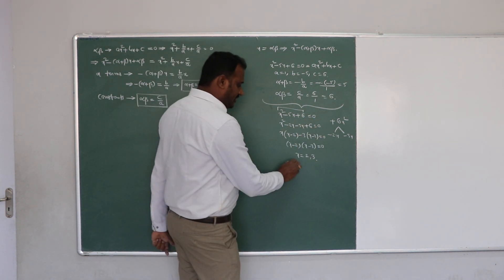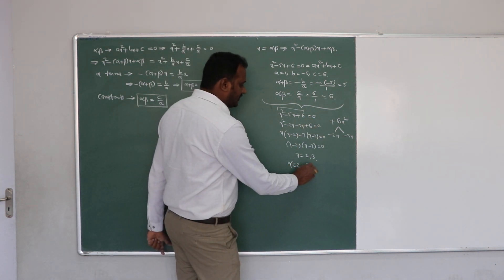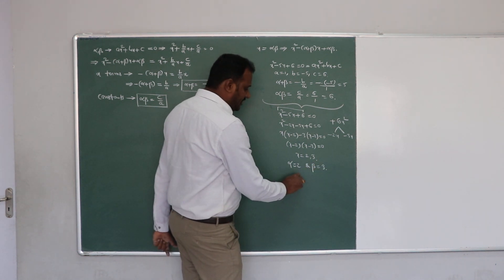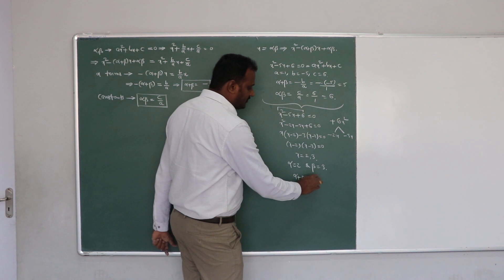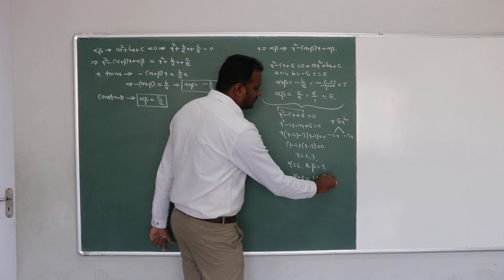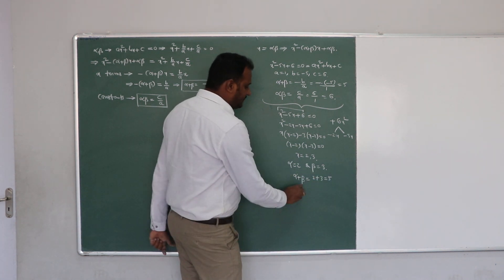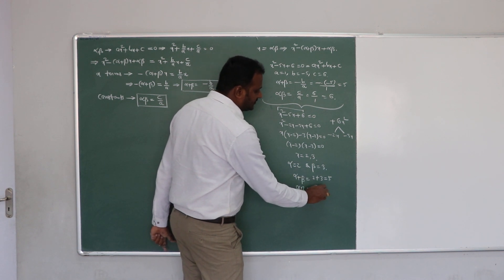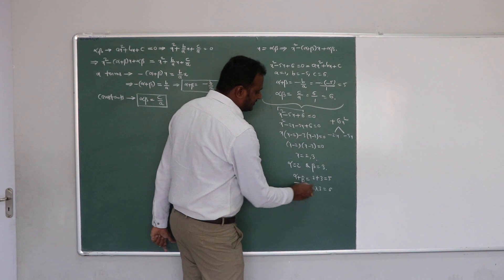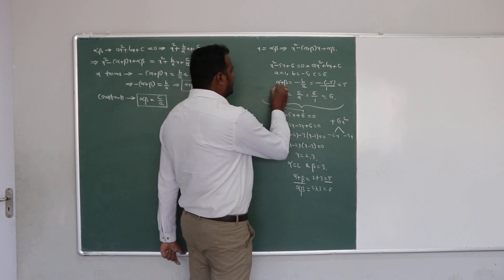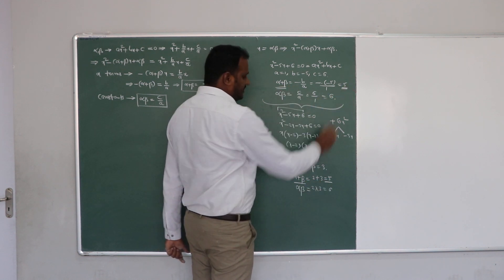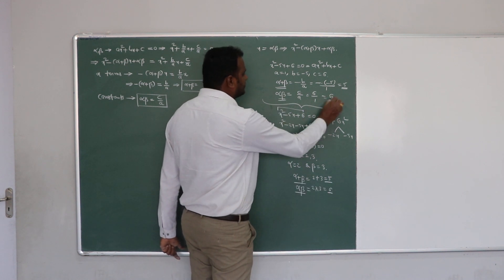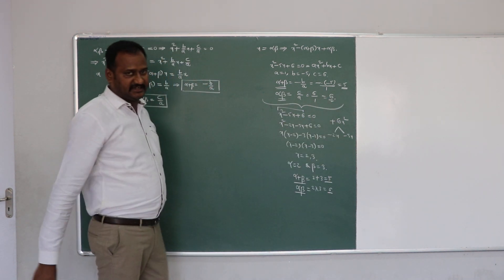From the first two terms we take x common: x(x minus 2) minus 3(x minus 2) equals zero, so (x minus 2)(x minus 3) equals zero. Therefore the values of x are 2 and 3, meaning one zero is 2 and the other is 3. So alpha plus beta equals 2 plus 3 equals 5, and alpha times beta equals 2 times 3 equals 6. Our answer is correct.